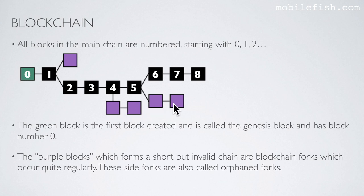The purple blocks which form a short but invalid chain are blockchain forks which occur quite regularly. These side forks are also called orphan forks.